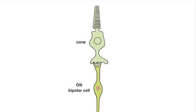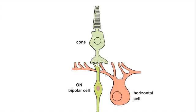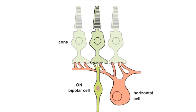In addition to sending signals to the bipolar cells, cones also send signals to horizontal cells, which connect to surrounding cones. Horizontal cells receive excitatory input from the cones and send inhibitory feedback in return.